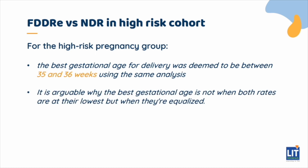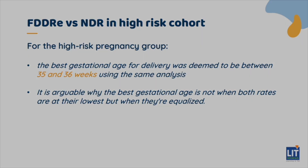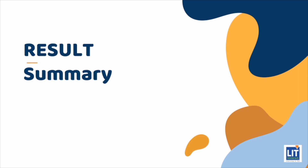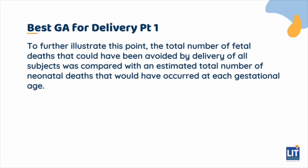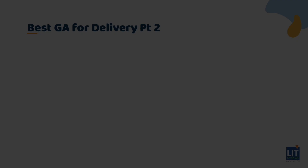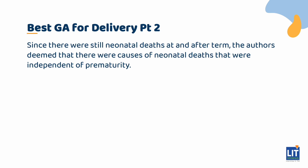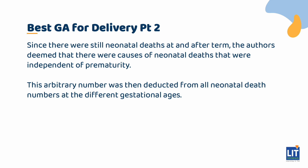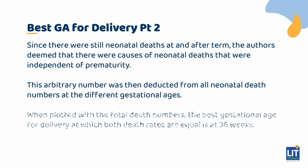It is arguable why the best gestational age is not when both rates are the lowest but when they equalize. The total number of fetal deaths that could have been avoided by delivery of all subjects was compared with an estimated total number of neonatal deaths that would have occurred at each gestational age. We could see that the numbers of both are about equal at 37 weeks. Since there were still neonatal deaths at and after term, the authors deemed that there were causes of neonatal deaths that were independent of prematurity. This arbitrary number was then deducted from all neonatal death numbers at the different gestational ages. When plotted with the fetal death numbers, the best gestational age for delivery at which both death rates are equal is at 36 weeks.